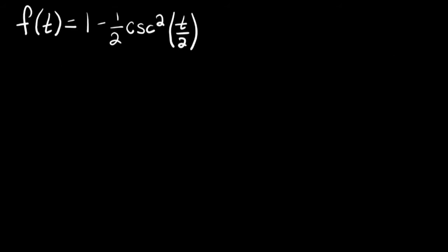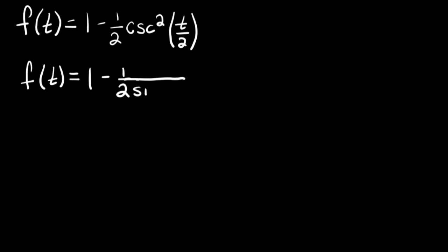We're trying to find where this function is looking for the zeros and where it's undefined. To make it easier, I want to rewrite it — instead of cosecant squared, I want to write it as 1 over sine, so cosecant is 1 over sine. This is going to be 1 over 2 sine squared of t over 2, with the 1 over in the center of the fraction.